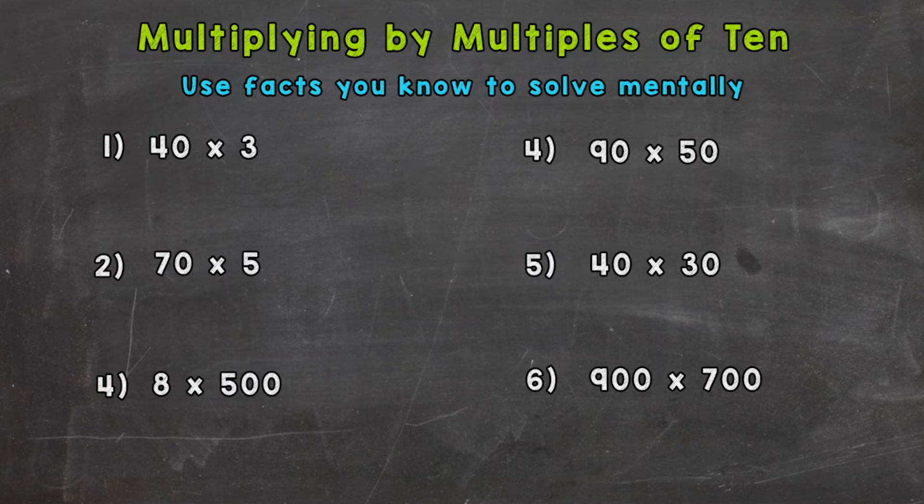So let's jump right in to number one. For number one we have 40 times 3. When we see a multiple of 10 in a multiplication problem, we can use some different mental math strategies in order to solve this mentally. Let's take our 4 from 40 and our 3 here and multiply them together. Like it says up top in blue, we're going to look for facts that we know and apply that to these problems. So let's do 4 times 3, and that's going to give us 12.